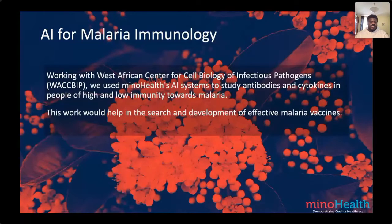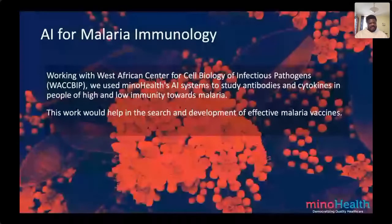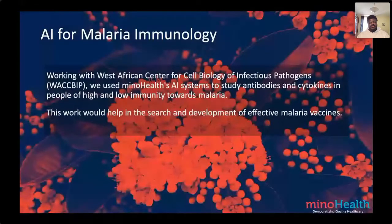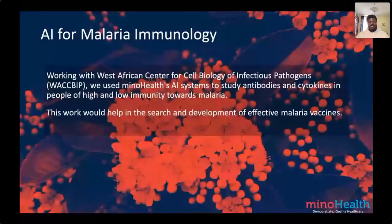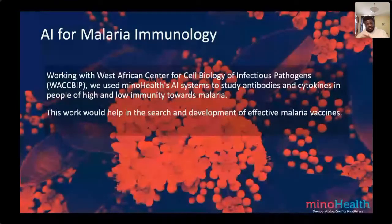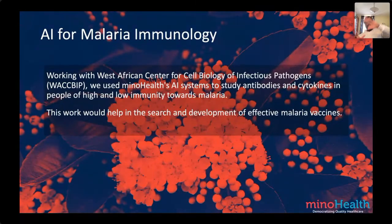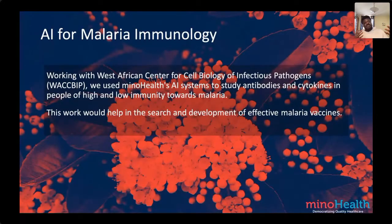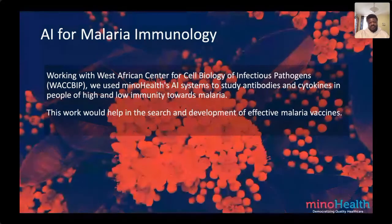One project we also had with WACBIP — the West African Center for Cell Biology of Infectious Pathogens — was that we developed AI systems able to look at antibodies and cytokines to differentiate between those who had low and high immunity towards malaria. The goal was to see what features and attributes are responsible for that difference, which would better help us develop responses in the form of vaccines towards malaria. This was research we did in 2019–2020.